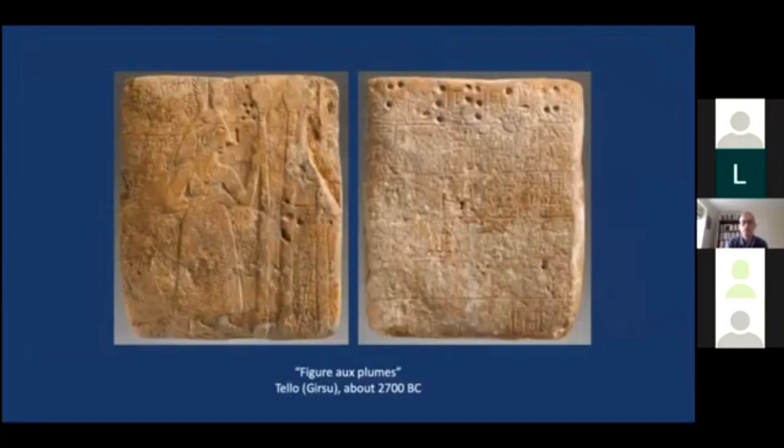Another example is the Figure of Plume in the Louvre Museum, showing an individual undertaking a ritual at the front of a temple building represented by two large columns, covered in writing that again records probably the transfer of land or goods between individuals.